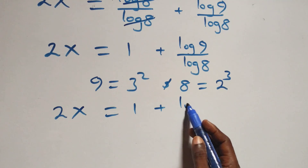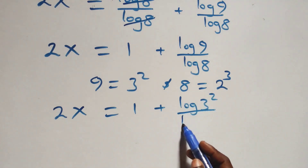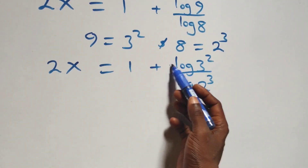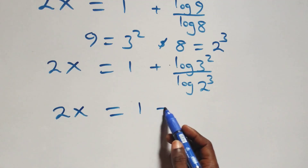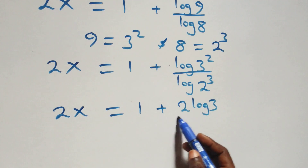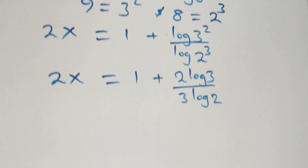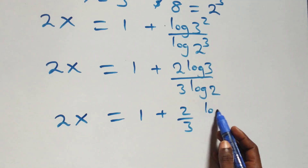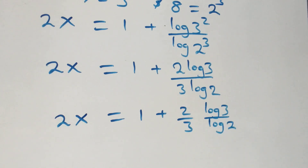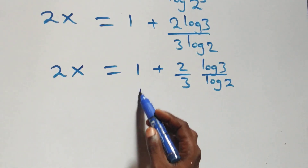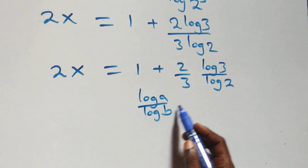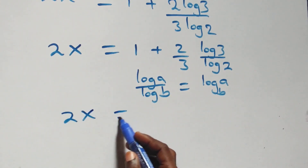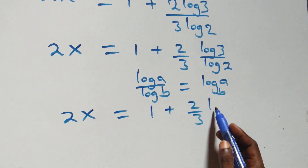Next, we apply the power rule of logarithms: 9 is 3 squared and 8 is 2 cubed, so 2 comes down and 3 comes down, giving 2x equals 1 plus 2 log 3 over 3 log 2. We separate this as 2x equals 1 plus (2 over 3) times (log 3 over log 2). Applying the change of base formula — log a over log b equals log base b of a — we get 2x equals 1 plus (2/3) log base 2 of 3.